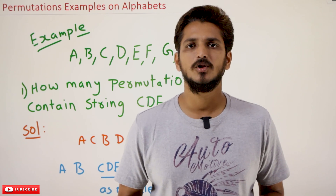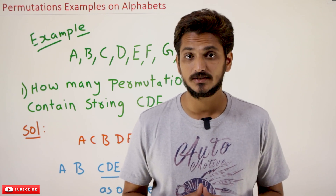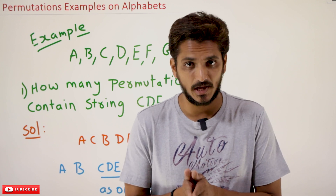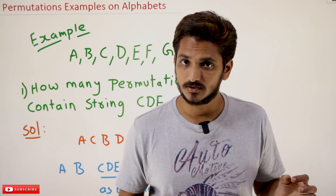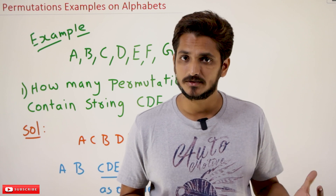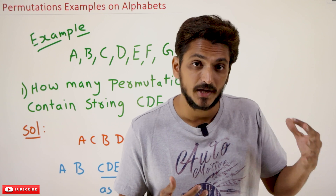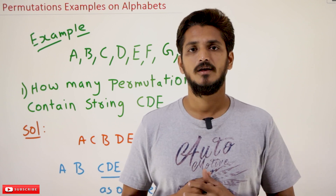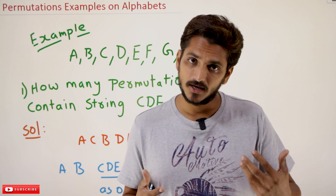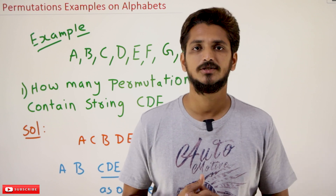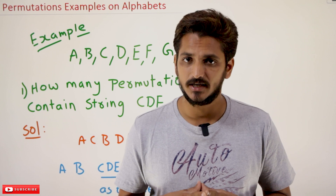Hi, welcome to Learning Monkey. I am Raghu here. In this class we will discuss permutations examples on alphabets. In our last classes we have done some examples on numbers. These are continuation classes. Please watch from the beginning for better understanding. Our explanation is completely based on the assumption you already have the previous basic knowledge. The link for the playlist is provided in the description below.